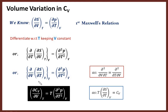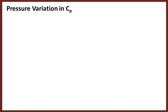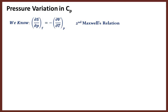Please note down this expression. Now in the last part, we will see the pressure variation of Cp — how specific heat at constant pressure changes with pressure. We take the second Maxwell's relation: (∂S/∂P)_T equals minus (∂V/∂T)_p. We differentiate this expression with respect to T keeping pressure constant.